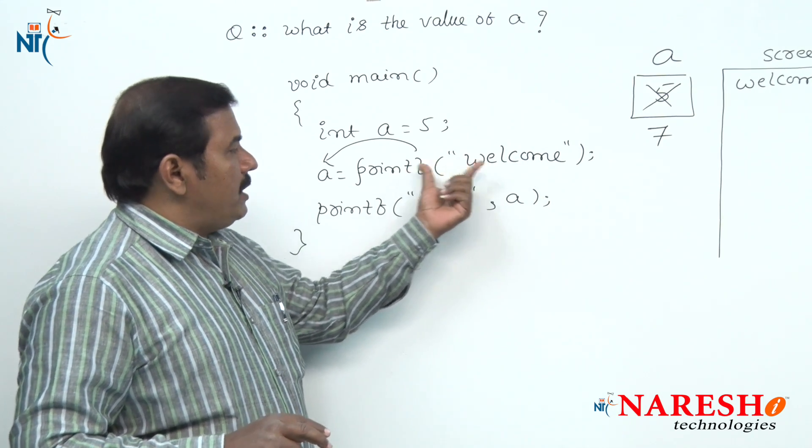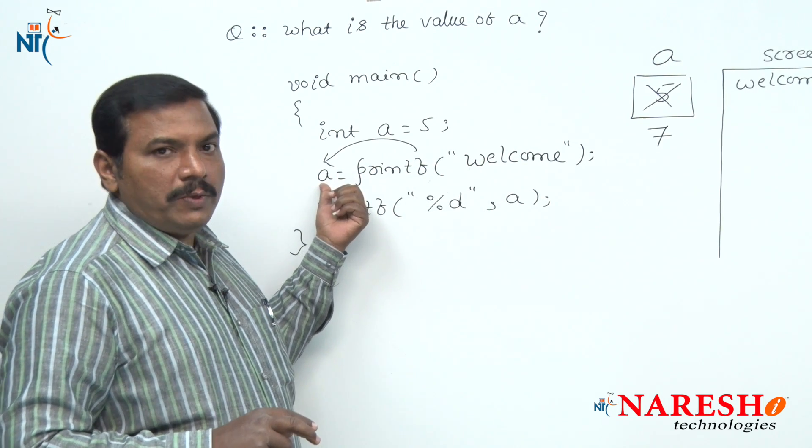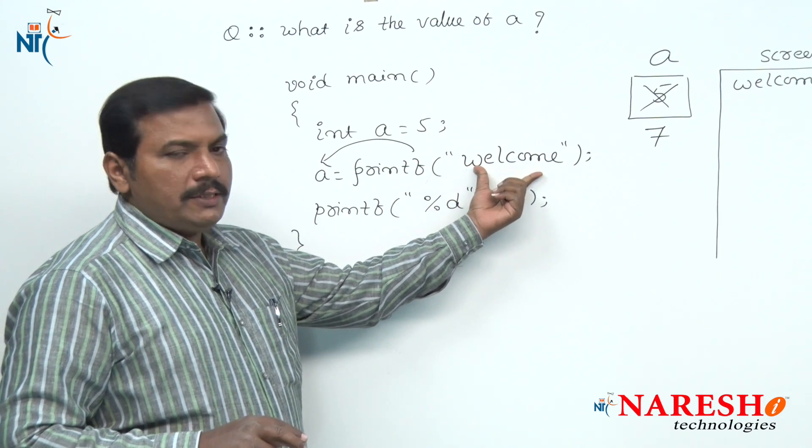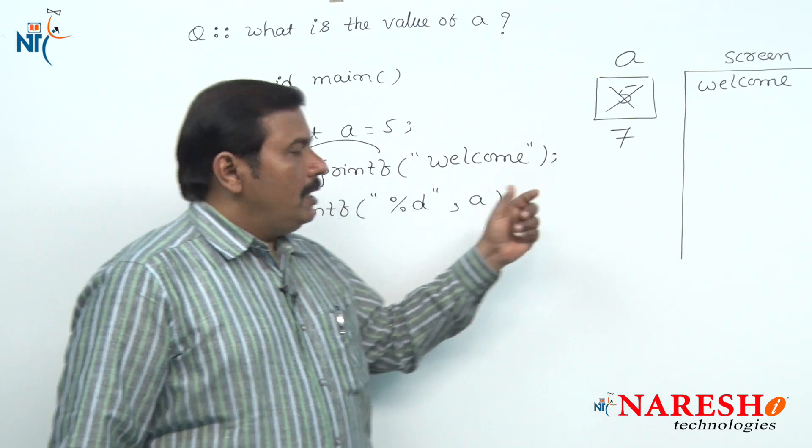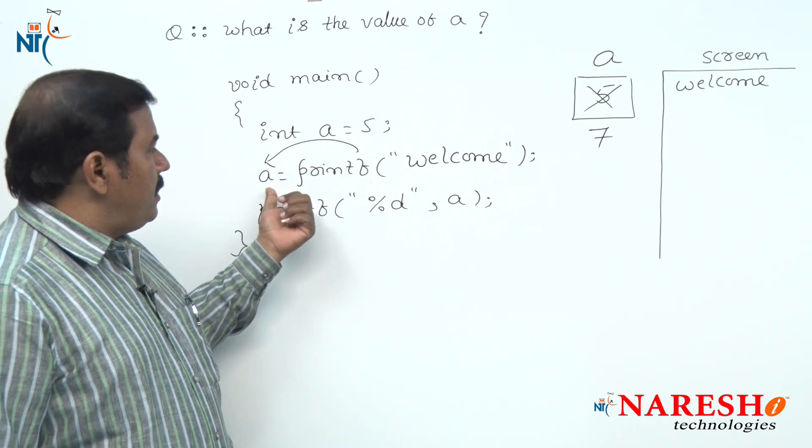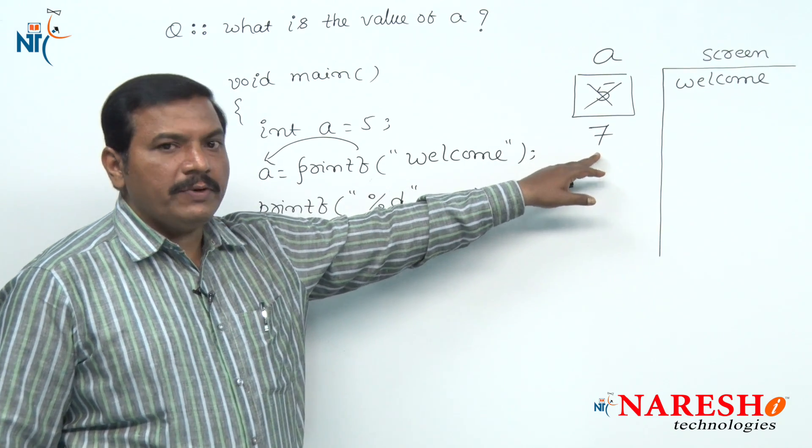Hence this printf returns the value 7 into variable A, as the total number of characters printed by printf onto the screen is 7. Now the value held by A is 7.